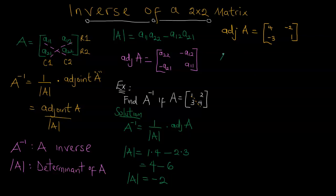Thus, the inverse of this matrix is 1 over the determinant, which is negative 2, times the adjoint [[4, -2], [-3, 1]]. Since 1 over negative 2 is a scalar, I can bring the negative up, giving a final answer of negative one-half times the adjoint [[4, -2], [-3, 1]].